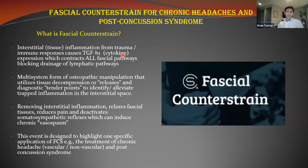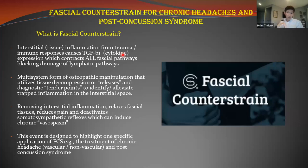Fascial Counter Strain in a nutshell is a diagnostic application where we use surface diagnostic tender points to figure out where deep inflammation is trapped. We then decompress that tissue, drain out that inflammation, and break the chronic pain cycle. Most practitioners go awry because they're addressing only the musculoskeletal system. The muscle system is more a protector of an inflamed, dysfunctional area. Virtually all tissues have pain receptors and can harbor trapped inflammation.